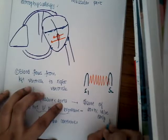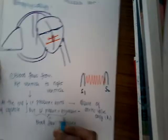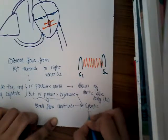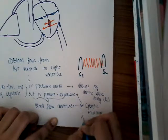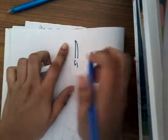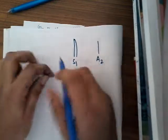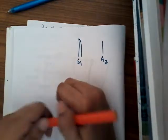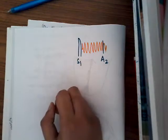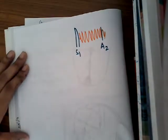There is early closure of the aortic valve — A2 occurs early — but because left ventricular pressure is still more than right ventricular pressure, blood flow continues through the defect. So the systolic murmur continues beyond A2. In the diagram: S1 is followed by A2, and the murmur starts at S1 and continues beyond A2.